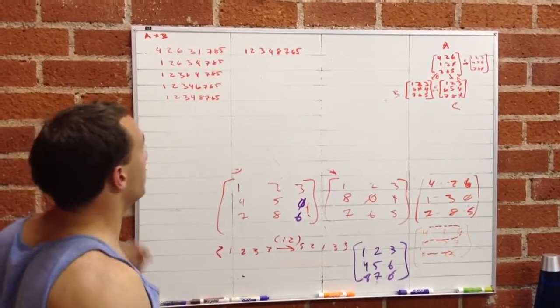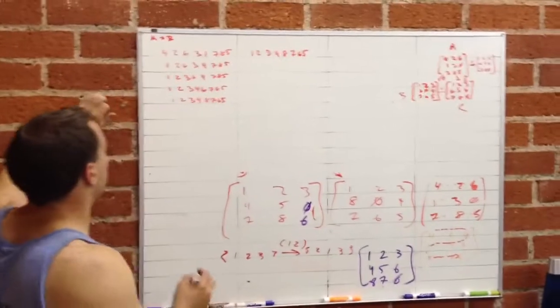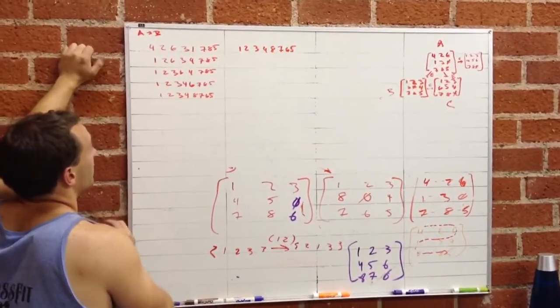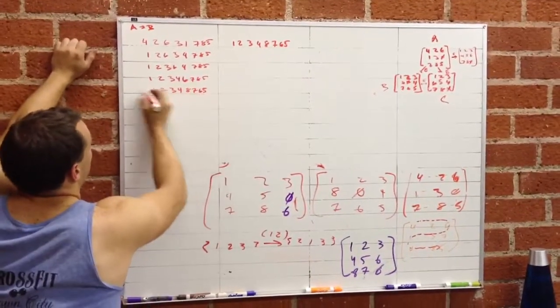So that took four steps to get from A to B. I want to get from B to C, so my initial state is now this.